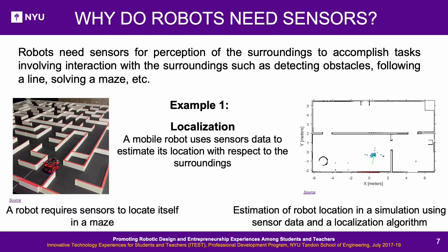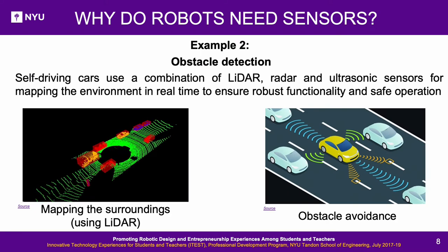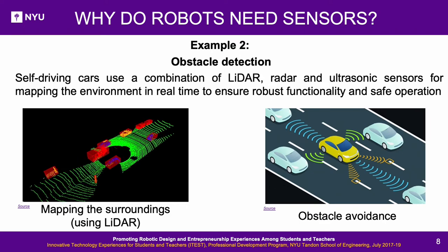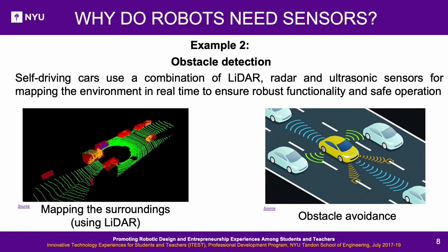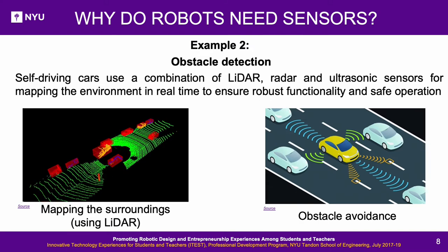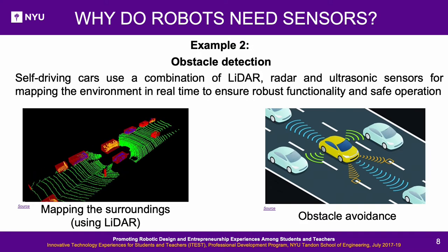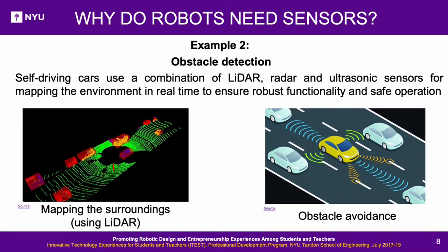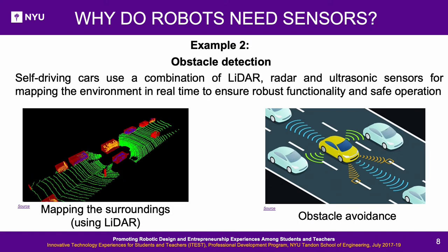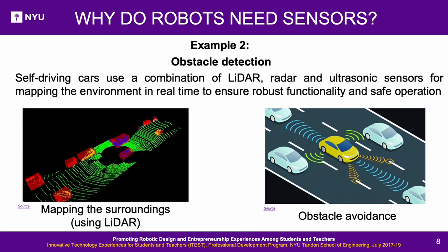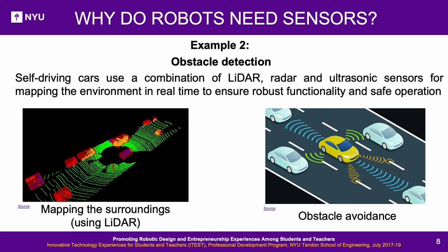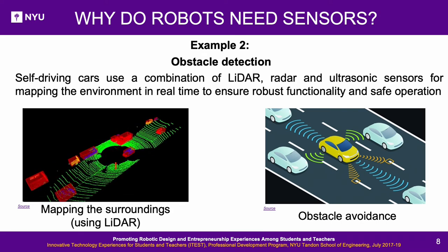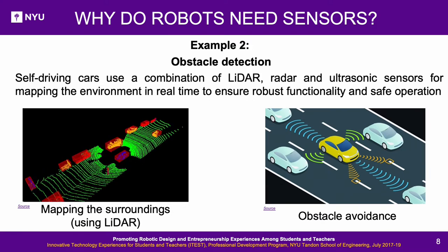Since GPS is accurate only up to a few meters, different sensor data can be combined to localize the robot with higher accuracy. Another example is object detection: for a mobile robot to avoid hitting obstacles, sensors can detect the presence of objects in the robot's environment. A relatable example is the ultrasonic sensor, covered in this lesson, whose time-of-flight measurement can be converted to distance since the speed of sound in air equals 332 meters per second. Self-driving cars use a combination of LiDAR, radar, and ultrasonic sensors for real-time environment mapping to ensure robust and safe operation.